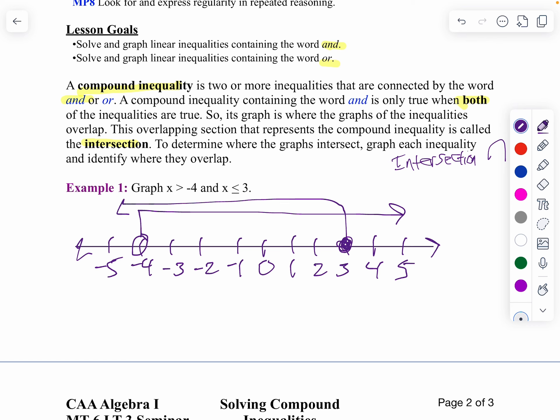Notice where they intersect is actually my solution. So I'm going to go from negative four to three. That's going to be my solution because it's got to be true for both of them at the same time.